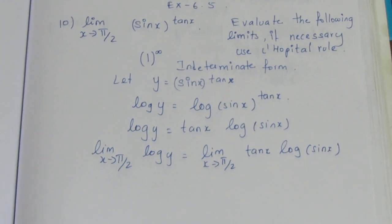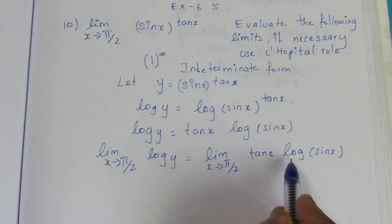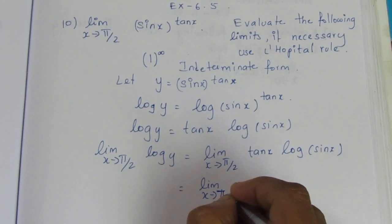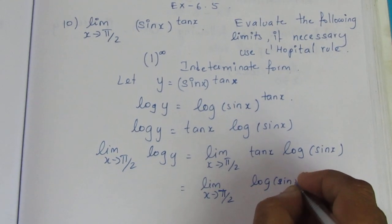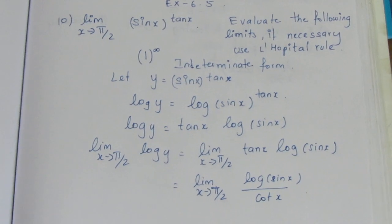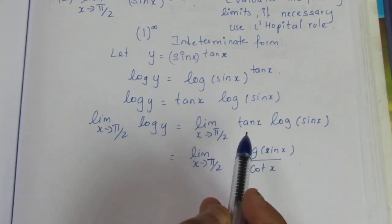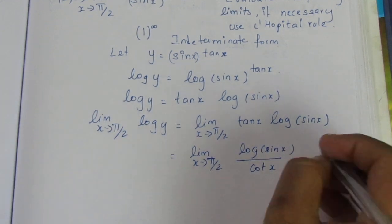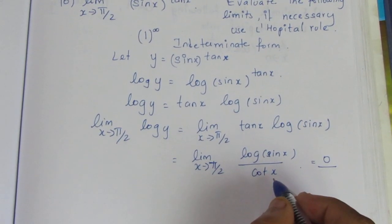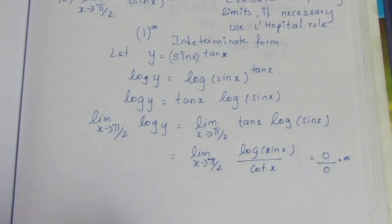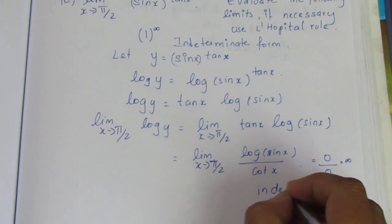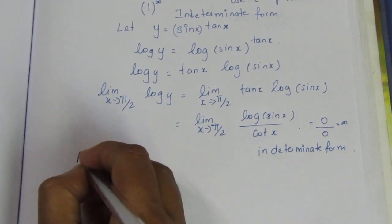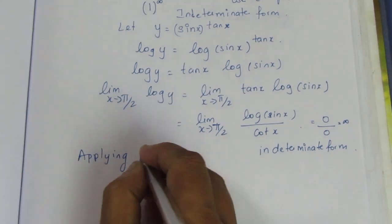Why do I do this? Tan x is 1 by cot x, so it becomes log sin x by cot x, which is 0 by 0 form. We can check: at x equals π/2, log 1 equals 0 in the numerator, and cot π/2 is not defined, which gives us 0 by 0 indeterminate form. So we can apply L'Hôpital's rule.